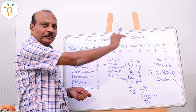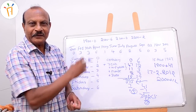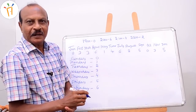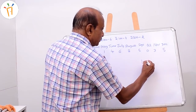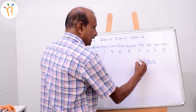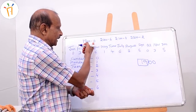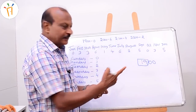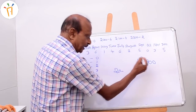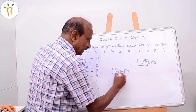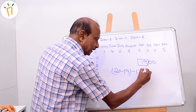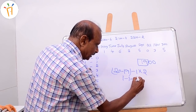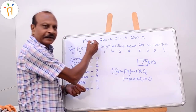Now I will explain how the century code numbers are derived. For 1900, the century is represented as 19. Find the next number completely divisible by 4, which is 20. The formula is: (next divisible number minus century number, minus 1) multiplied by 2. So: 20 minus 19 equals 1, minus 1 equals 0, times 2 equals 0. That is why 1900 has code number 0.